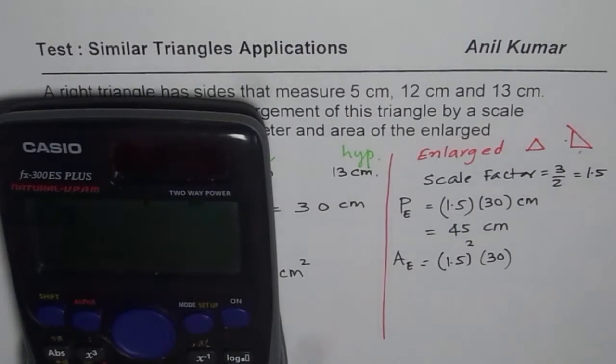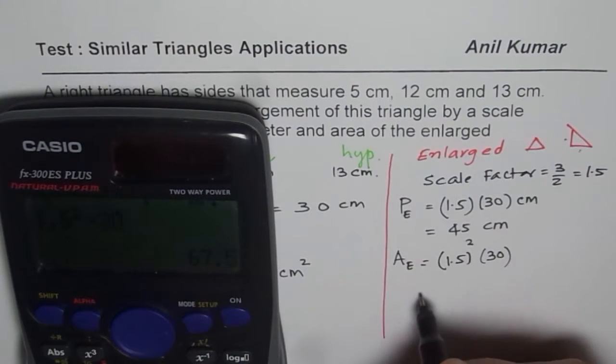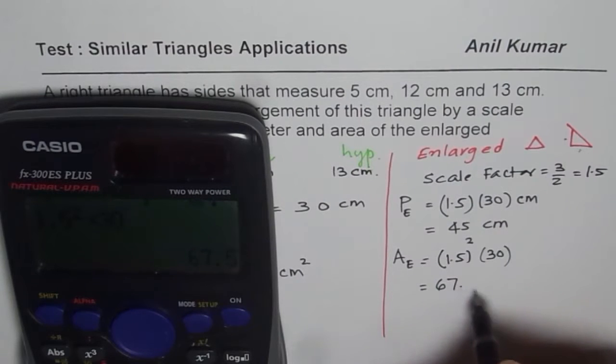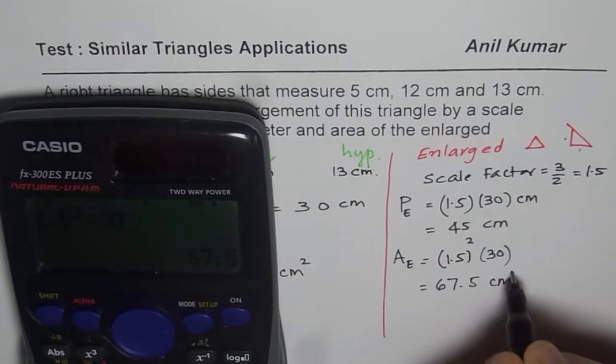So let's do this. 1.5 square times 30 will become the area, which is equal to 67.5 centimeters square. You get the idea.